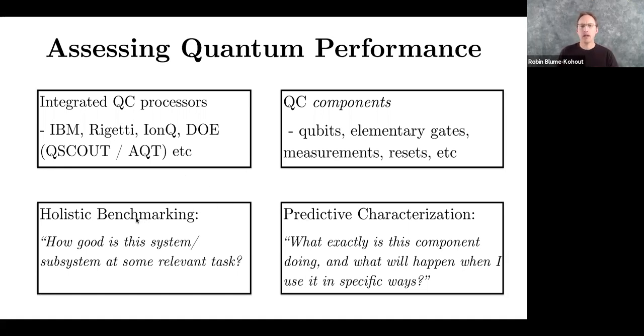So these two aspects of our research split into predictive characterization and holistic benchmarking. Holistic benchmarking is what something like LINPACK does in the classical computing world. It asks how well does this whole system work together? If your system does really well or really poorly at LINPACK, that doesn't usually give you very much information about what might be going wrong. That's the role of predictive characterization, which focuses on individual components and isolating performance bottlenecks, or in the case of quantum computing, error modes.